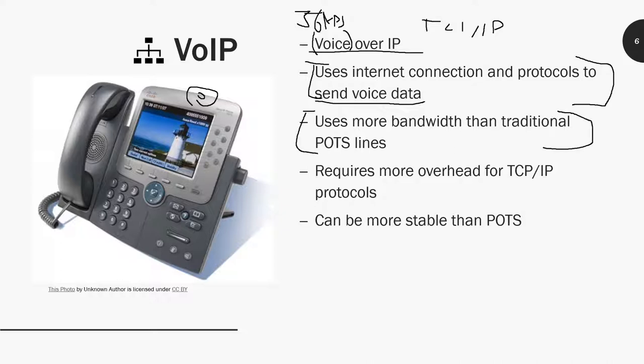VoIP uses more bandwidth than traditional POTS lines. Voice over IP has a larger footprint on your network compared to those old tin-can phones. It requires more overhead because of TCP/IP protocols — the voice data has an IP address, port numbers, a MAC address, and many additional stamps. All that extra information is needed so the data knows where to go across the network.